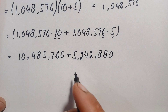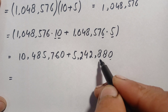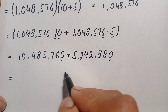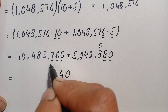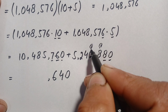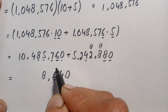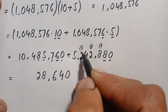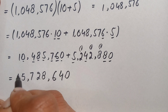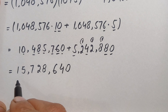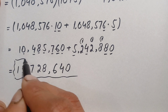Finally, we add 10,485,760 and 5,242,880. Adding digit by digit from the ones place: 0+0=0, 6+8=14 (write 4 carry 1), 7+8+1=16 (write 6 carry 1), 5+2+1=8, 8+2=10 (wait, adjusting), working through the positions gives us 15,728,640. So the answer is 15,728,640.